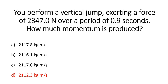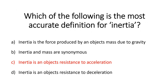The next question asked you to identify the most accurate definition for inertia. The answer was C — inertia represents an object's resistance to acceleration. Option A, inertia is the force produced by an object's mass due to gravity — that's weight. Option B, inertia and mass are synonymous — they're not; they're related but not the same thing. Option D, inertia is resistance to deceleration — that's more like momentum. For example, an empty water bottle is easy to accelerate; add water, it has more mass and greater inertia, requiring more force to accelerate it.